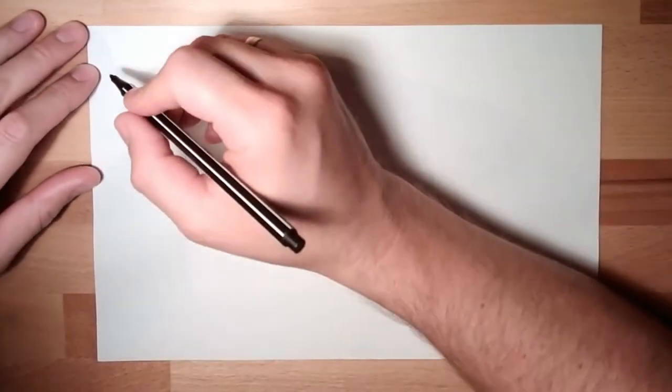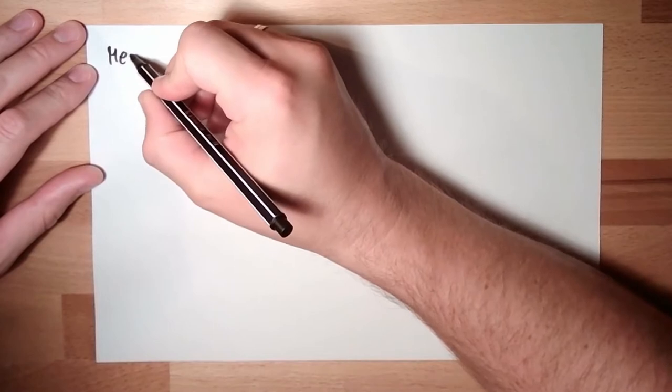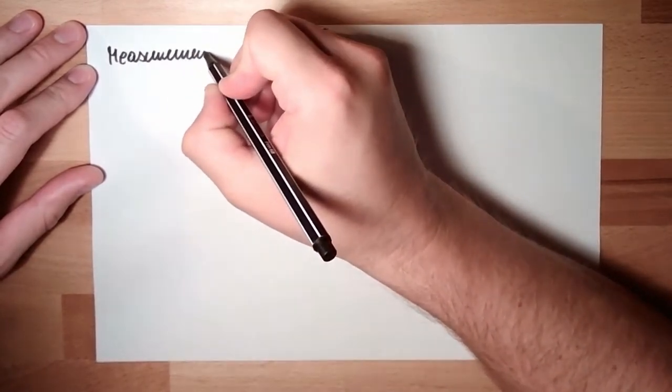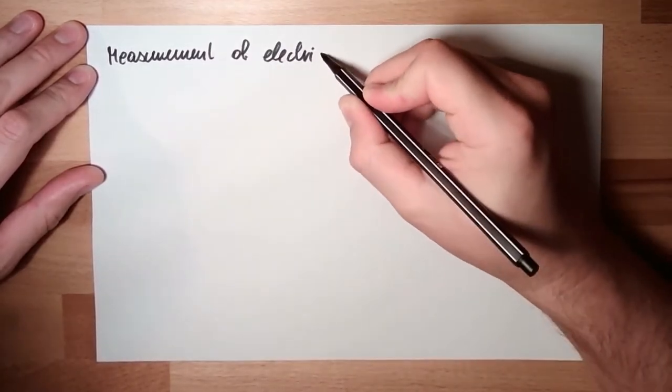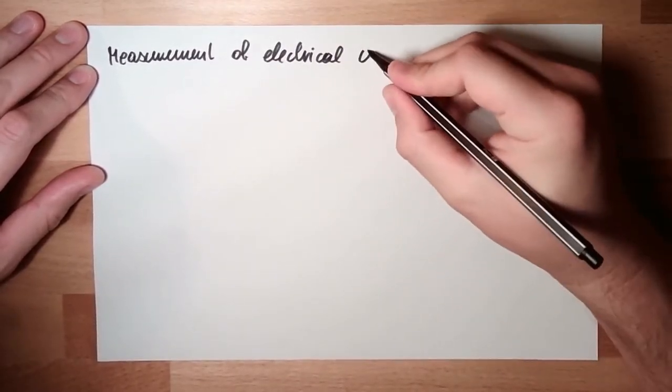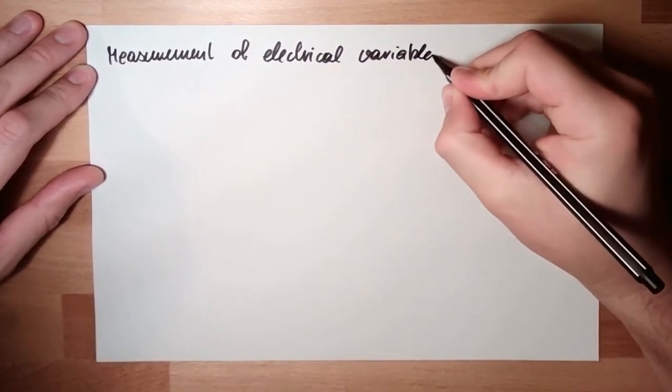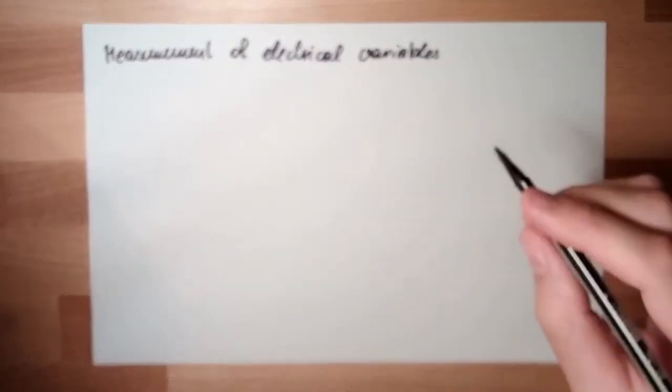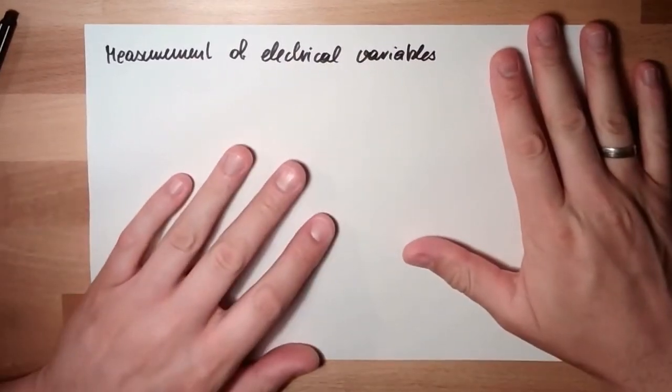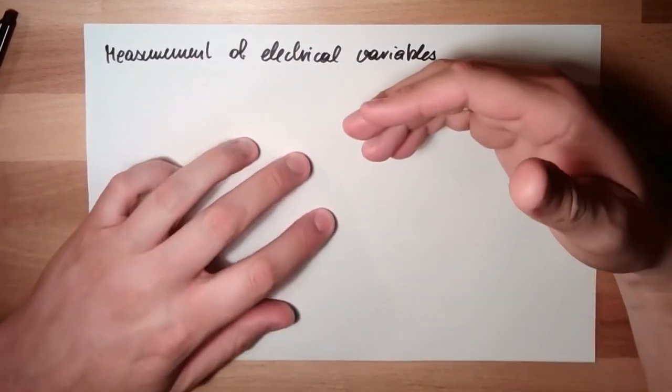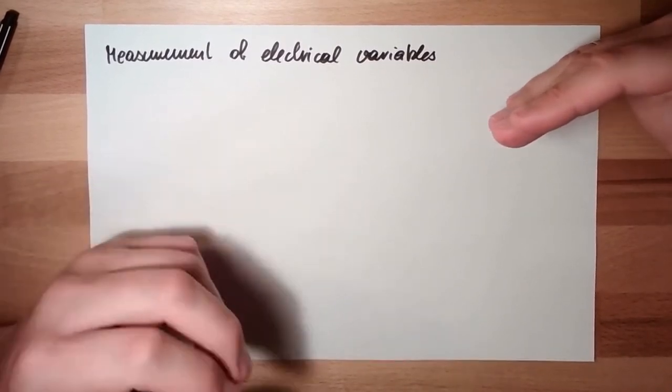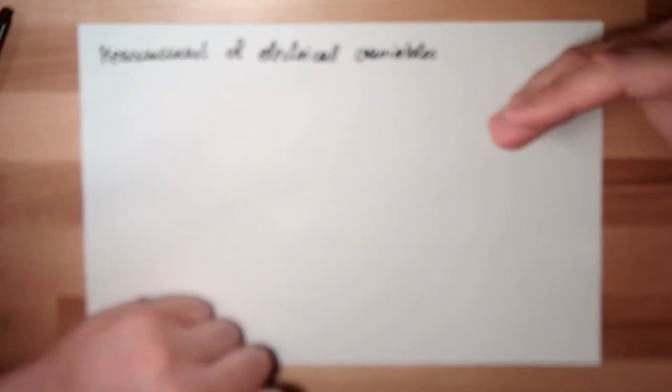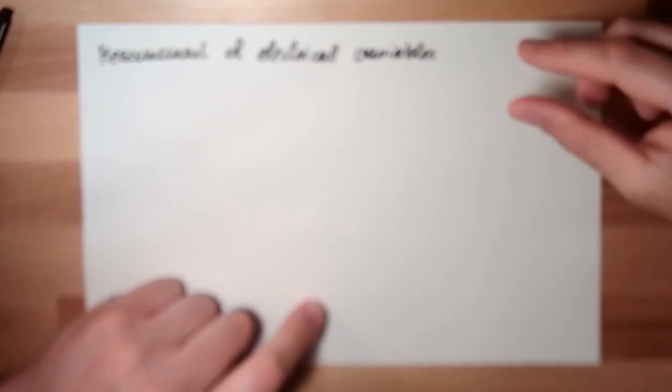So why are we talking about measurement of electrical variables, properties and so on? Because most of the sensors we are going to get to know are simply changing some electrical property, and to measure this property we have to measure the electrical variables showing this property.